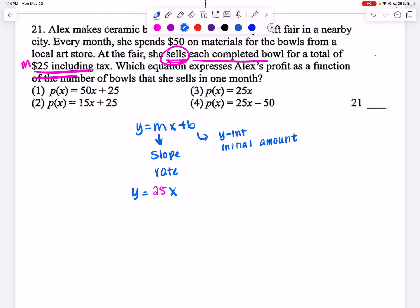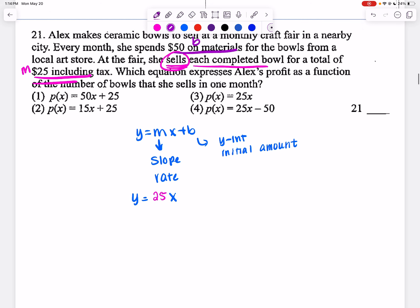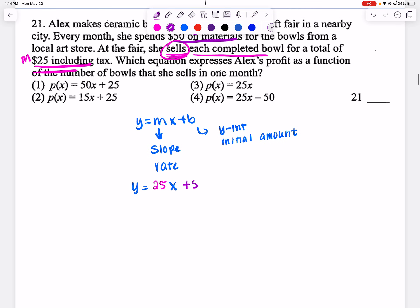In this case, you might think right away to write plus 50 because that's sort of our go-to thing—that is your y-intercept. She's spending $50 before she even starts selling. So you might think, oh, I have to do plus 50. But if you look at your answer choices, there is no plus 50.